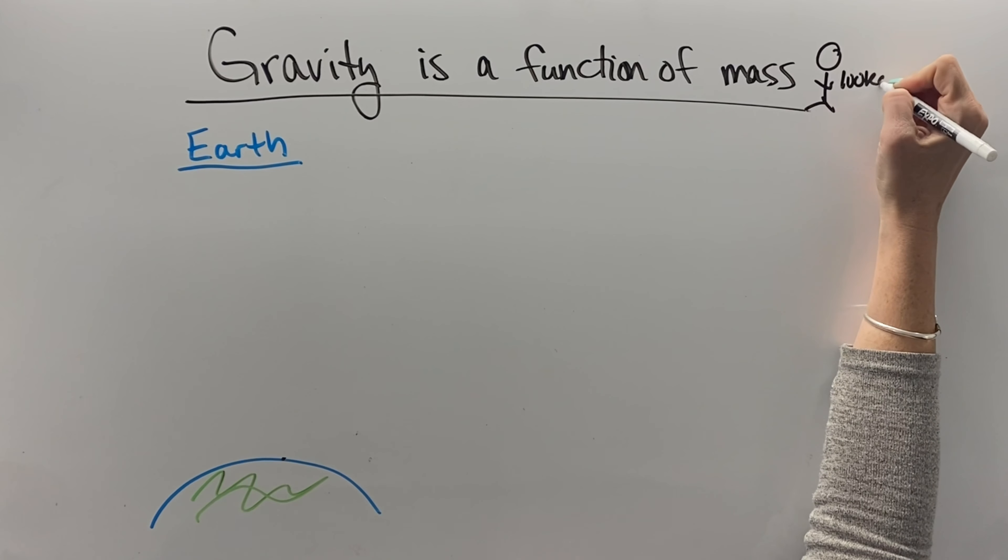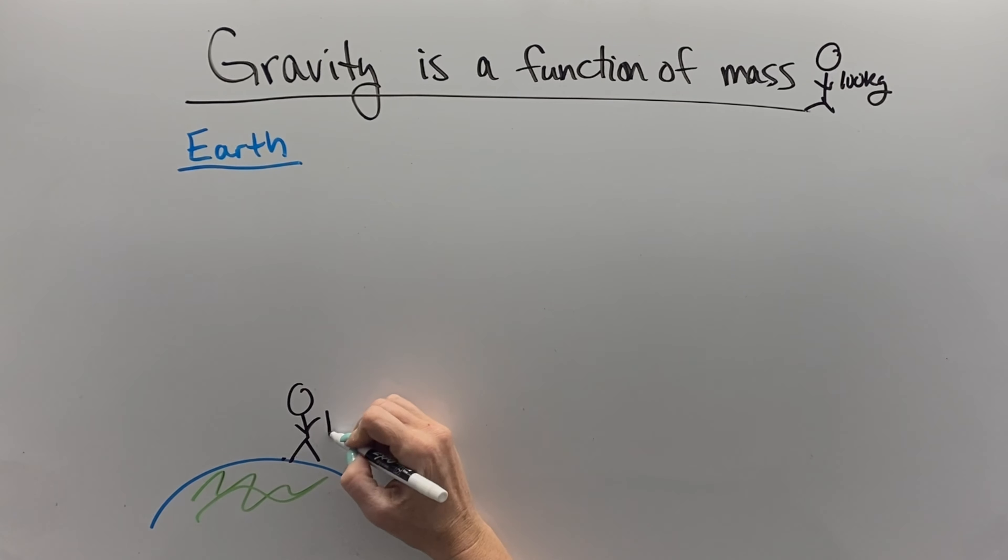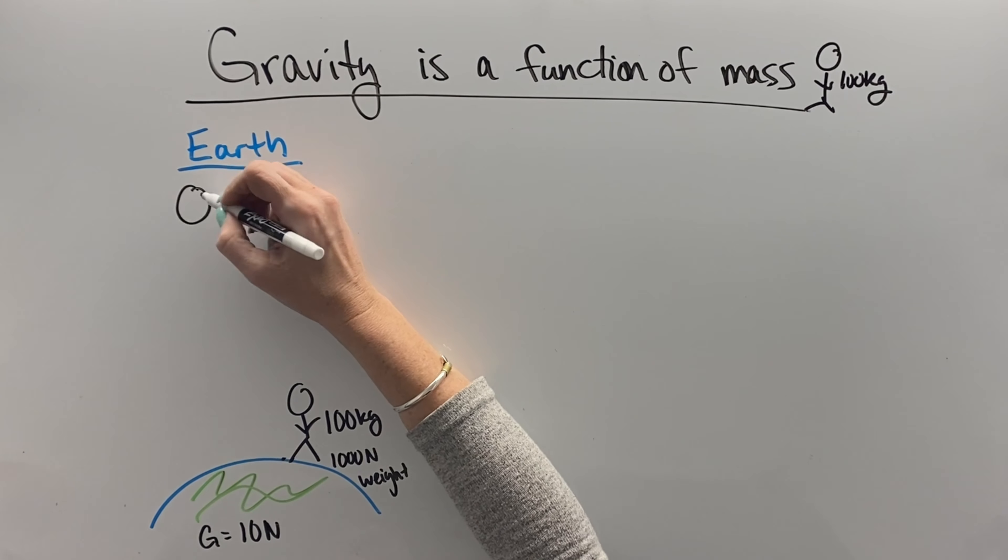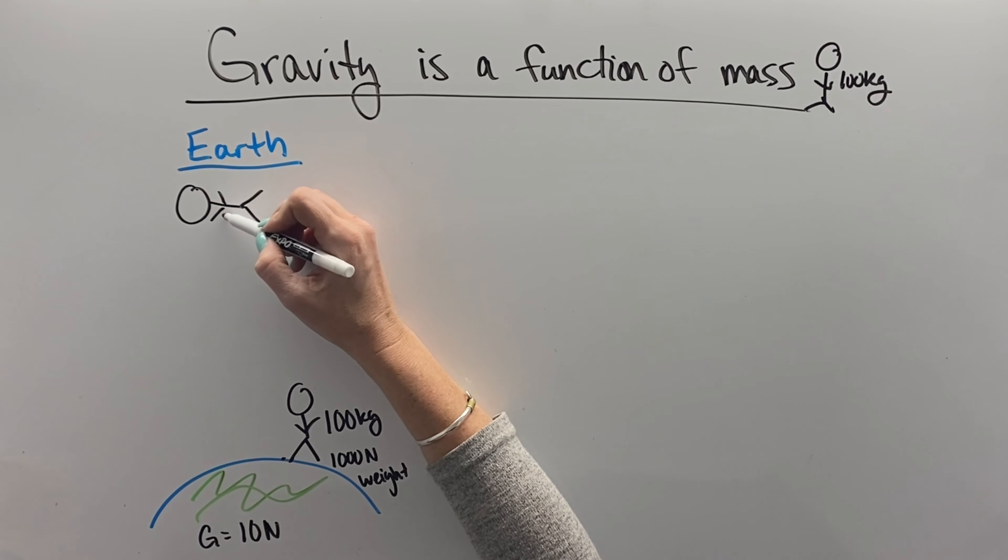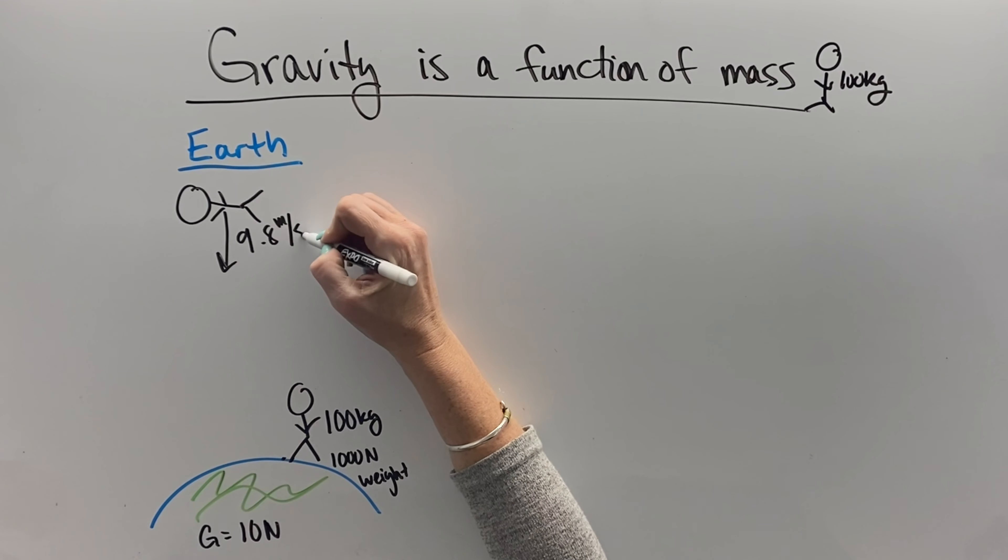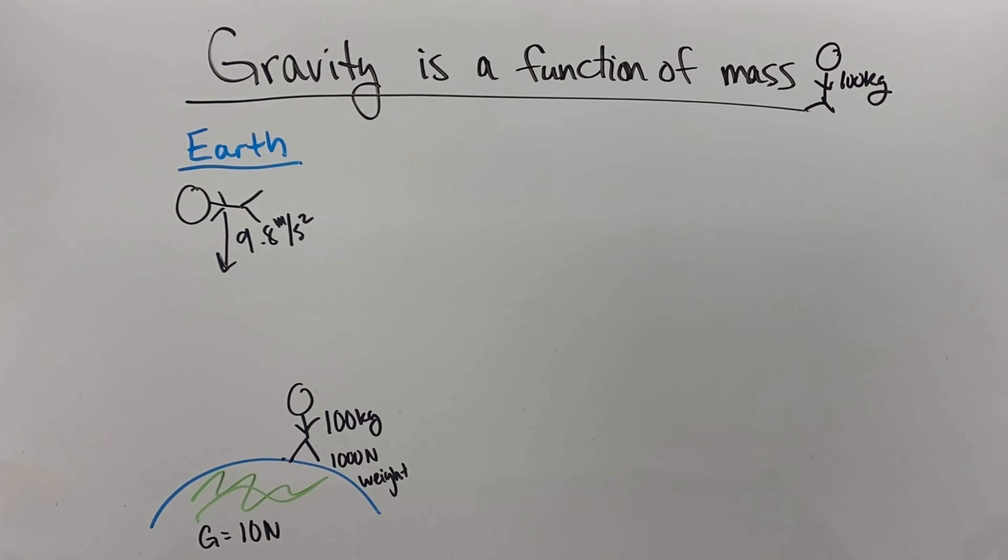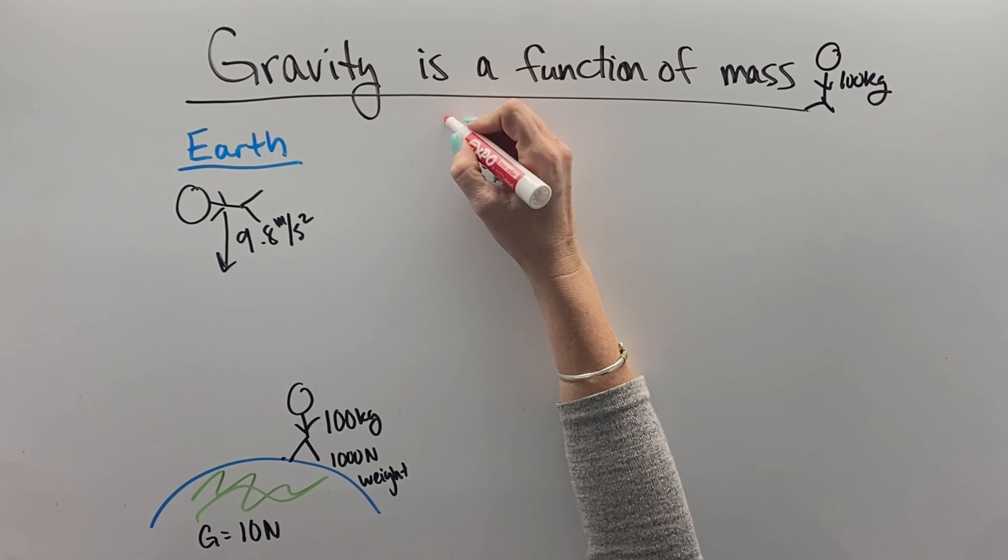We have a 100-kilogram person. On Earth, that 100-kilogram person is being pulled down - every kilogram is pulled down with 10 newtons of force. So the person weighs 1,000 newtons on planet Earth, which if they were to fall would cause them to accelerate at 9.8 meters per second squared.